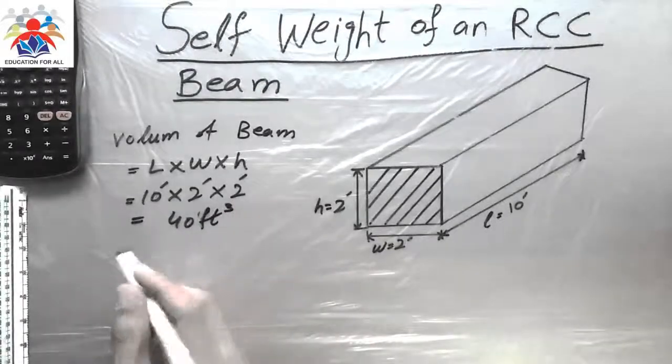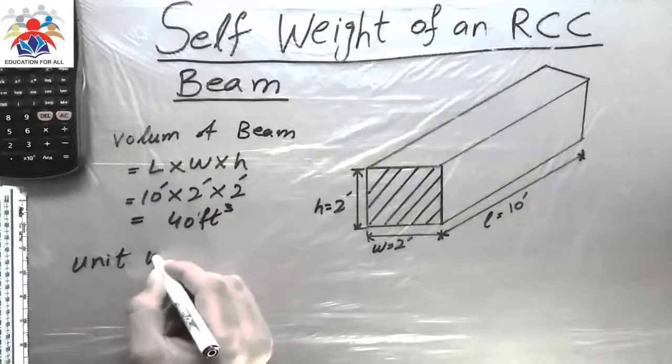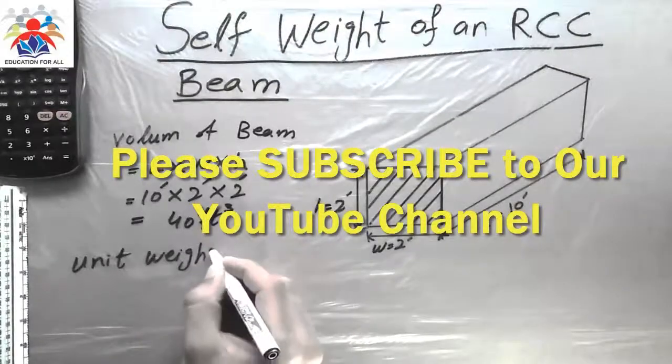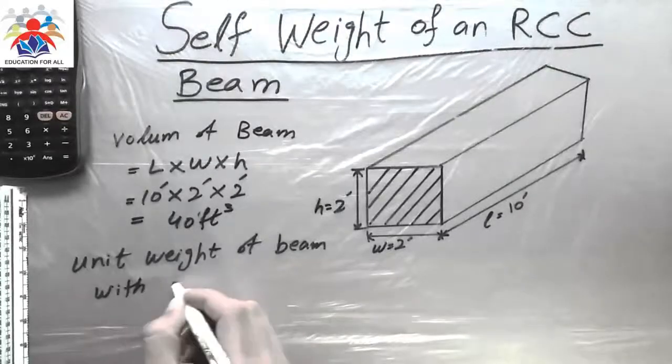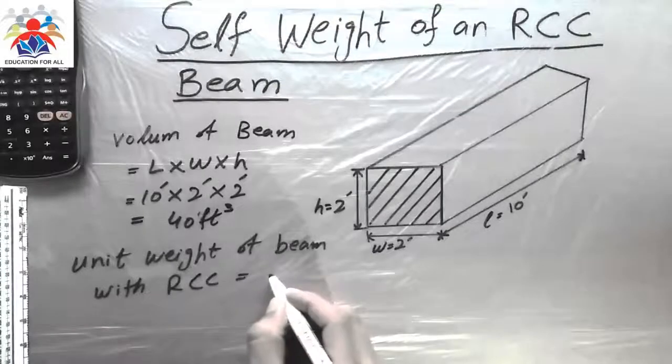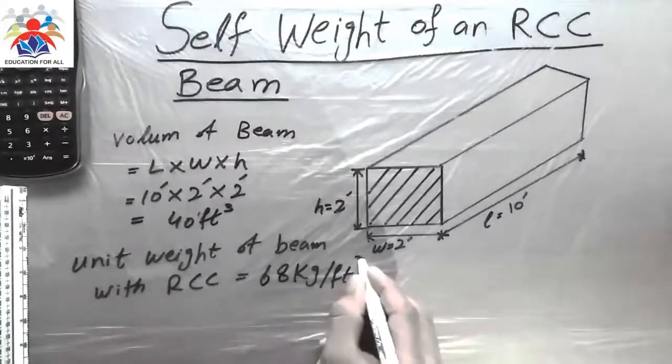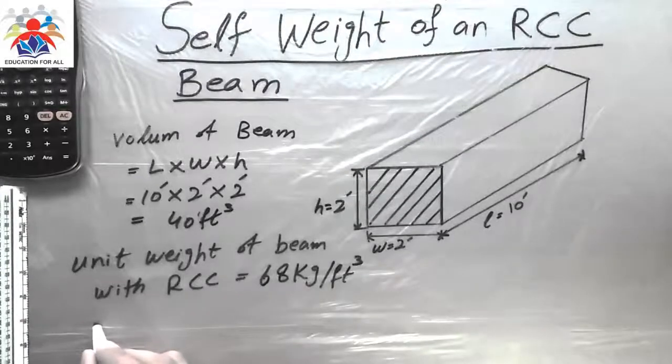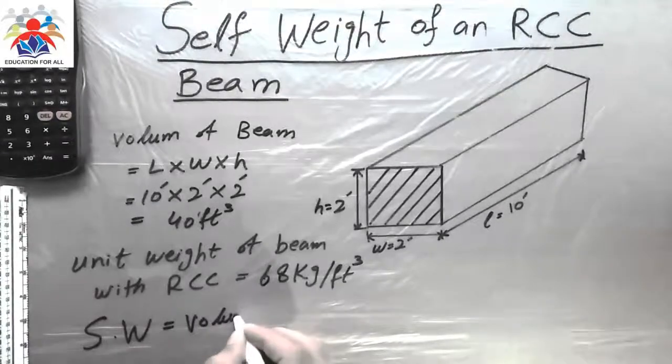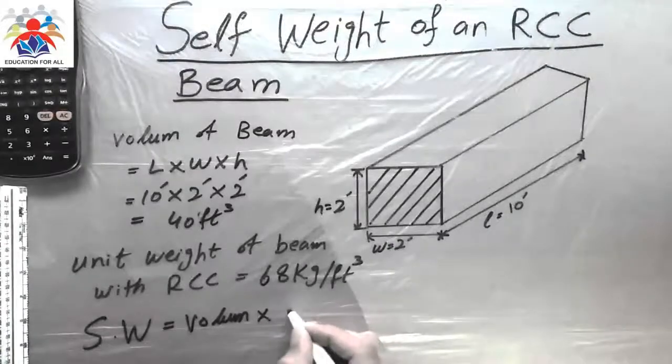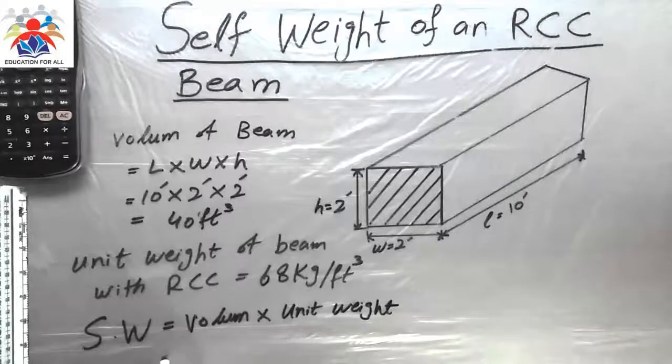Now we need to calculate volume multiply by unit weight. Unit weight of the beam with RCC is equal to sixty eight kilogram per cubic feet. So the self weight, the weight of the beam, would be volume multiply by unit weight.